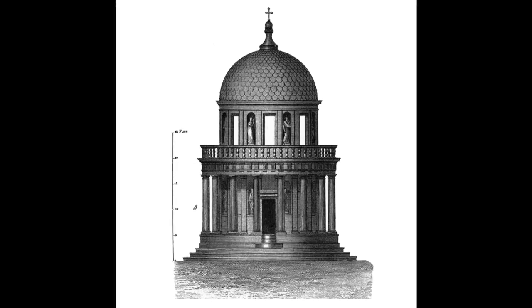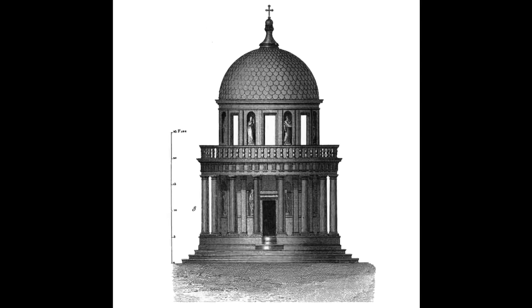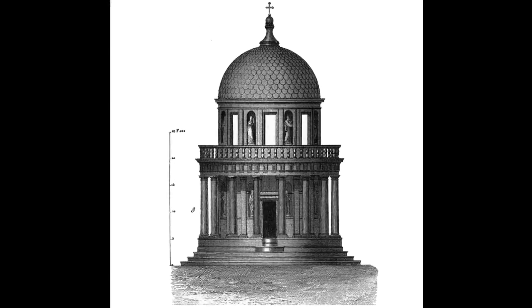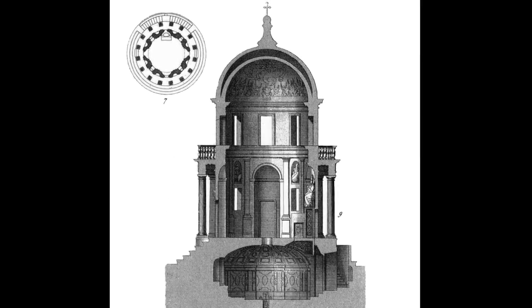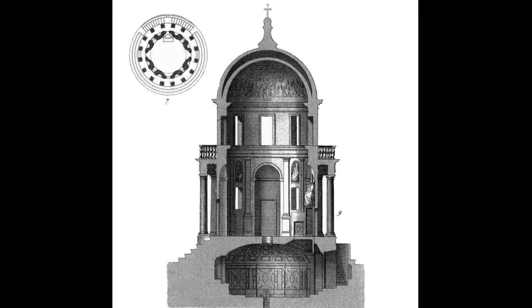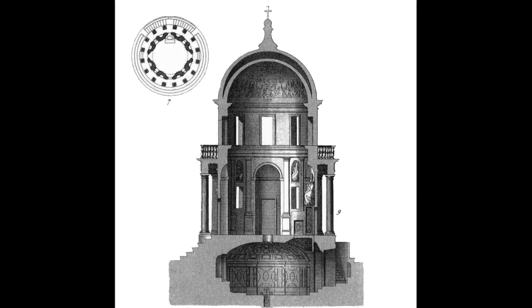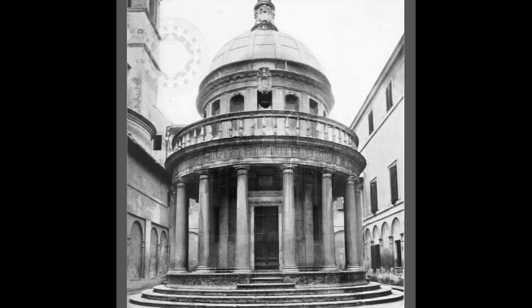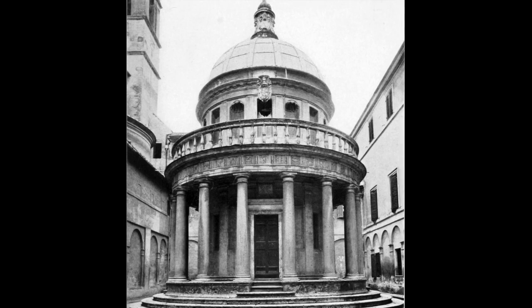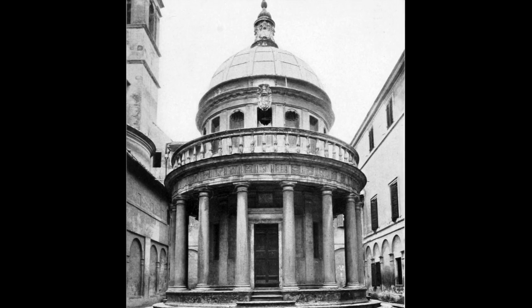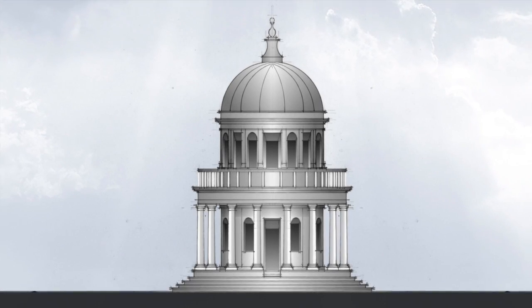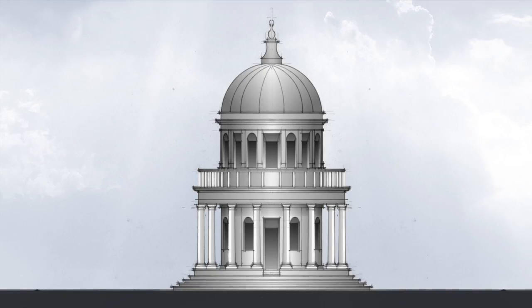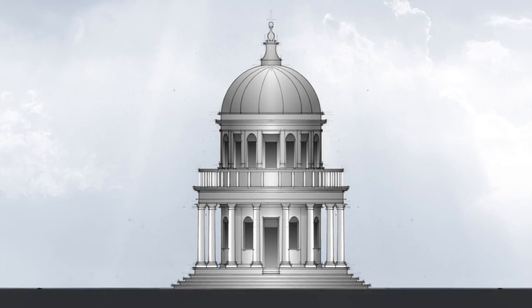The Tempietto in Rome is a martyrium. Because of its circular form, classical elements, proportions, and dome, it's considered one of the most elegant and harmonious buildings of the Renaissance. Donato Bramante was the architect.